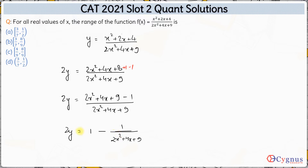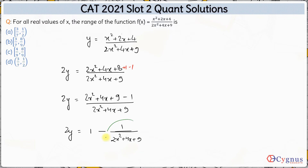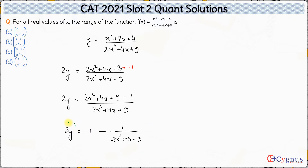We now need to figure out the maximum and minimum value of the right-hand side. This expression will be maximum when 1/(2x² + 4x + 9) is minimum, and minimum when that term is maximum. In other words, y will be maximum when the quadratic expression is maximum and minimum when it is minimum.